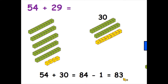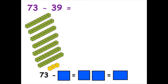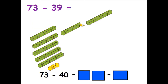Easy peasy, lemon squeezy! Let's have a look at another one, which is similar but different in some ways. Here we've got 73 take away 39. So I've got 73 and I need to take away 39. The last one was adding, this one's taking away, but the concept and method are the same. What could I take away instead of 39 to make it simpler and easier to do in my head quickly? I could just take away 40, because that's much easier than taking away 39.